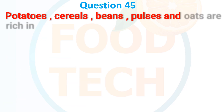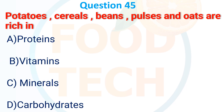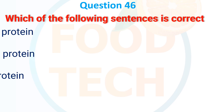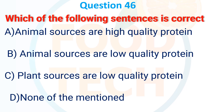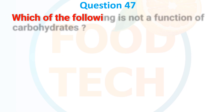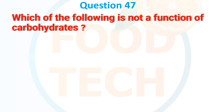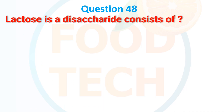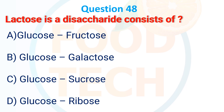Question 41: Potato, cereal, beans, pulses, and oats are rich in — A. Protein, B. Vitamins, C. Minerals, D. Carbohydrate. The answer is D. Carbohydrate. Question 42: Which of the following statements is correct? A. Animal sources are high quality protein, B. Animal sources are low quality protein, C. Plant sources are low quality protein, D. None of the mentioned. The answer is A. Animal sources are high quality protein. Question 43: Which of the following is not a function of carbohydrate? A. Storage of energy, B. Fuel for metabolism, C. Structural component, D. None of the above. The answer is D. None of the above. Question 44: Lactose is a disaccharide consisting of — A. Glucose and Fructose, B. Glucose and Galactose, C. Glucose and Sucrose, D. Glucose and Ribose. The answer is B. Glucose and Galactose.